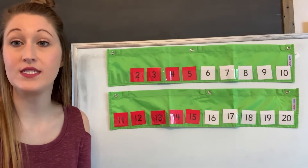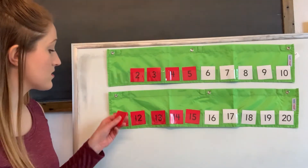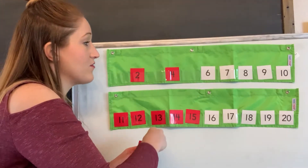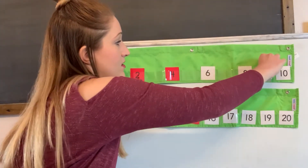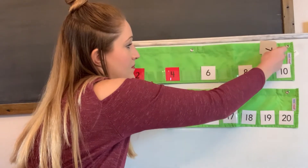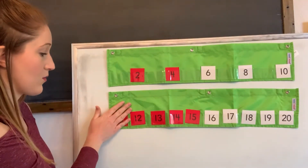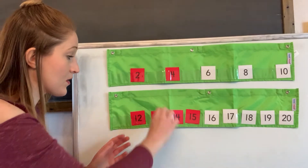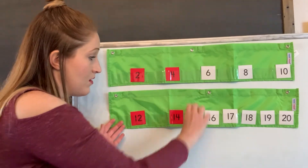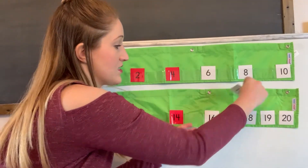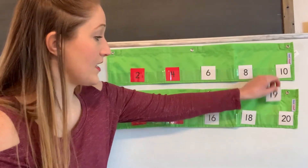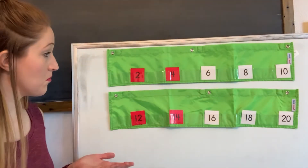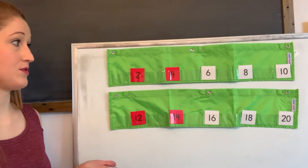So what I can do to show you is I can take away all of the odd numbers. Remember, odd numbers are numbers that have a one, three, five, seven, or nine in the one-digit place. So I'm gonna take away one, three, five, seven, and nine. And then I'm gonna come down to my second row and take away 11, 13, 15, 17, and 19. So now I'm left with about half as many numbers.